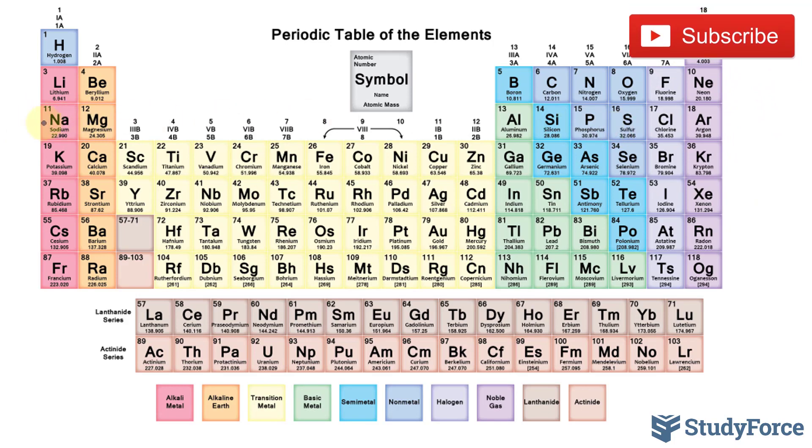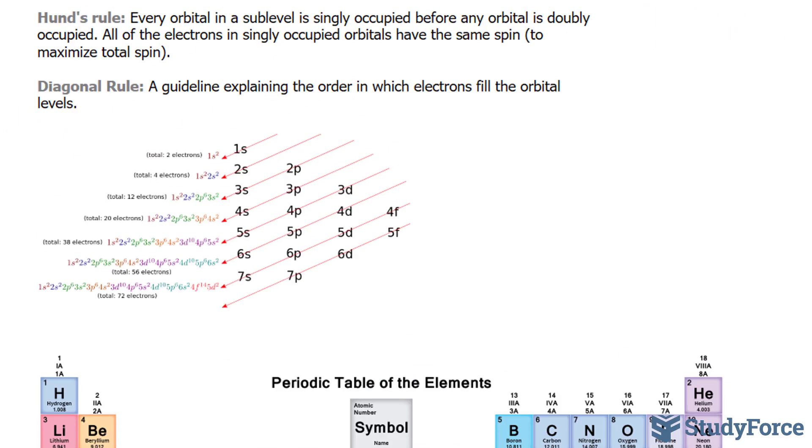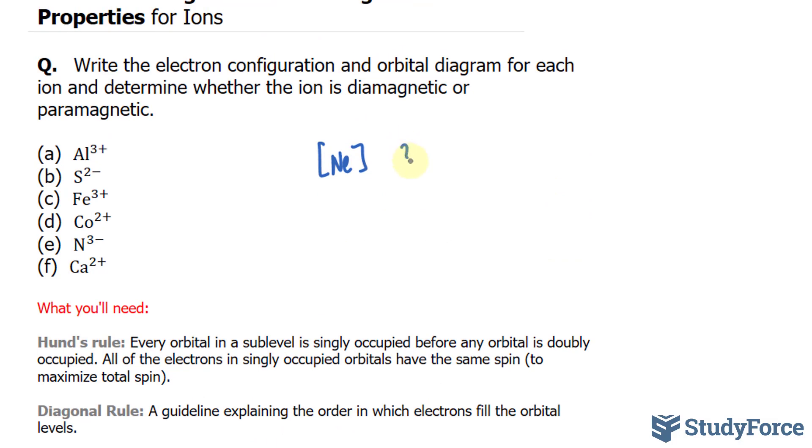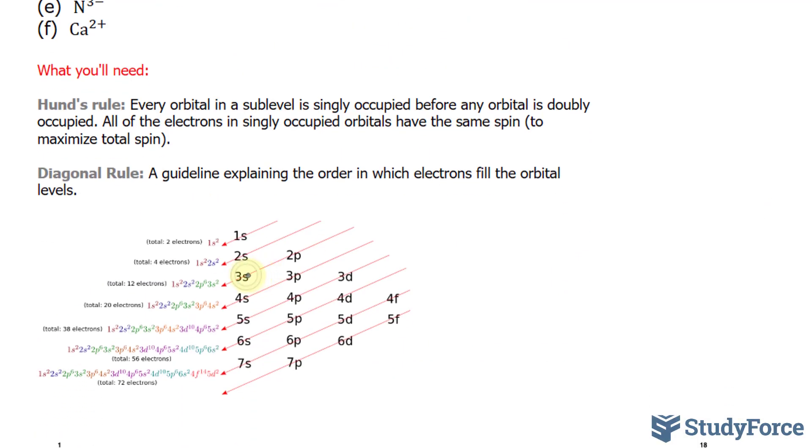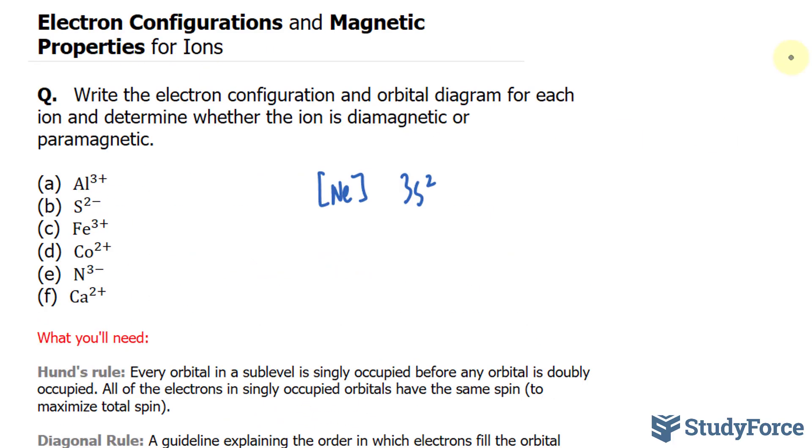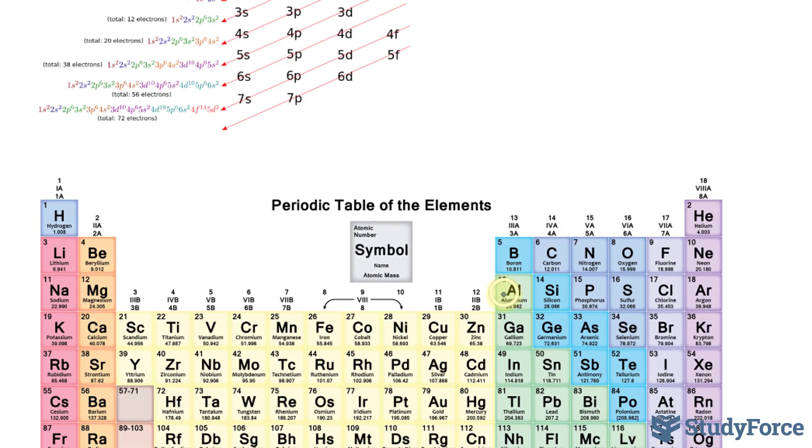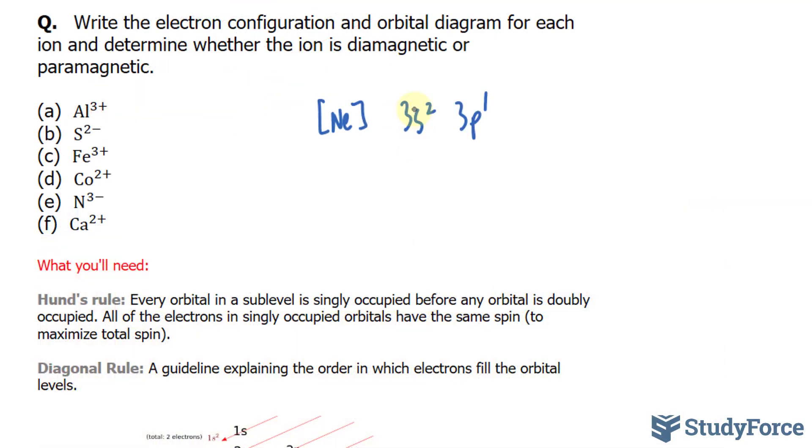And since it's in the third row, we write down 3s2. So let's go ahead and do that. 3s2, according to the diagonal rule, after 3s comes 3p, 3p1. And the reason why I'm at 1 is because it's right at the beginning of the p-block.